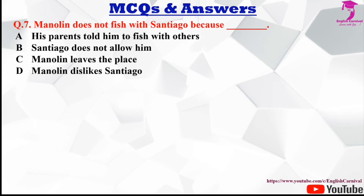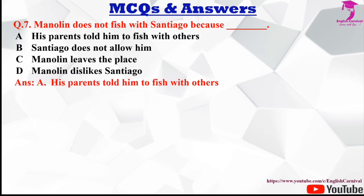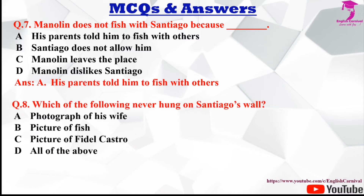Question number seven: Manolin does not fish with Santiago because — A his parents told him to fish with others, B Santiago does not allow him, C Manolin leaves the place, and D Manolin dislikes Santiago. The correct answer is A, his parents told him to fish with others.